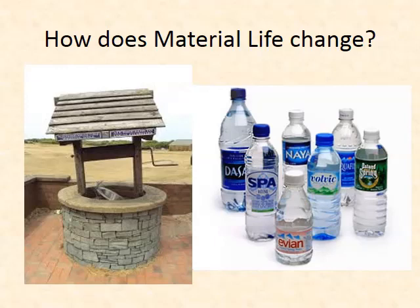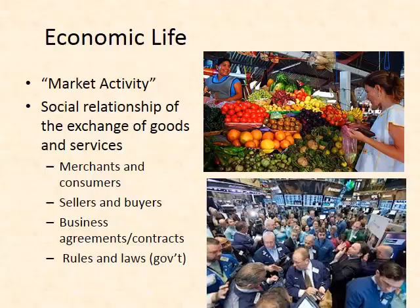The goods we consume have also changed significantly over time. You can see on the left a well — you used to have to go to a well and use a bucket to get water. Now we sell 15 different types of bottled water in our stores. So material life — the way that we consume water — has changed significantly in human history.